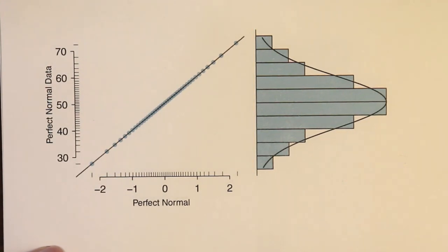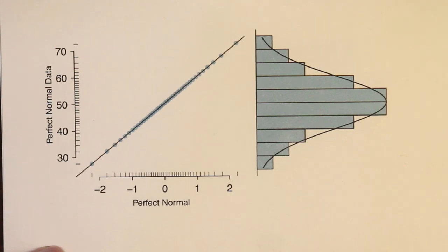In this first example we're actually looking at what is the ideal normal distribution data set. We only have 40 observations here and the data set is symmetric. It also very closely follows the normal distribution — it's basically as close to a normal distribution as we can get with a data set of size 40.